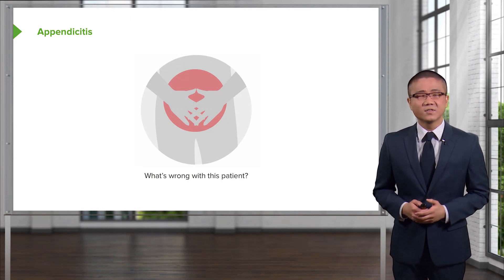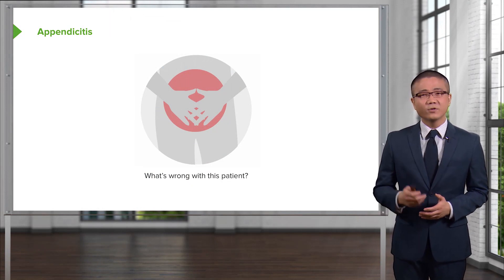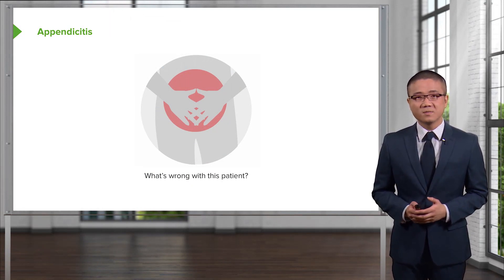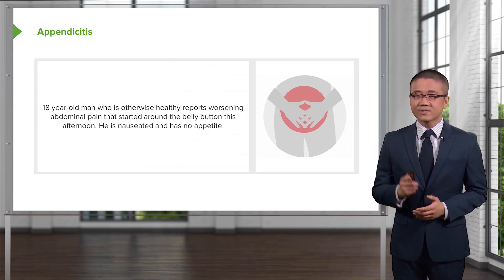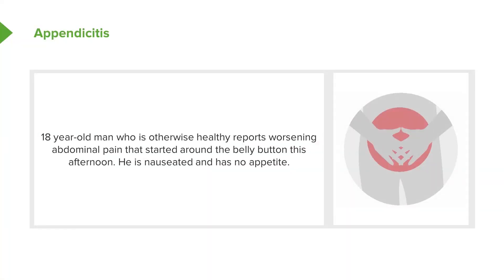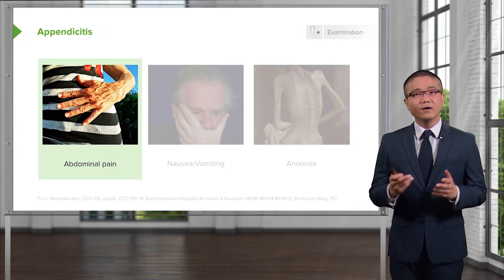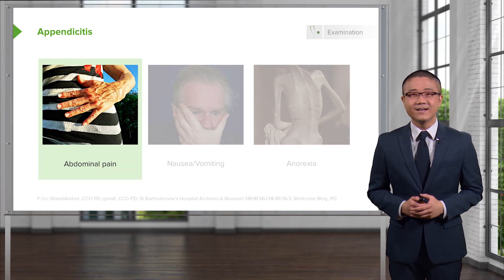A patient comes to the emergency department and holds the lower abdomen. Let's start with a clinical scenario. An 18-year-old man who is otherwise healthy reports worsening abdominal pain that started around the belly button this afternoon. He also reports nausea and has no appetite. What's on your differential diagnosis as you're seeing this patient in the emergency department? Of course you're thinking appendicitis in this young, healthy man.